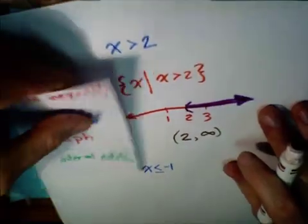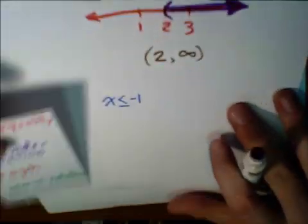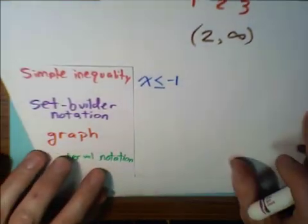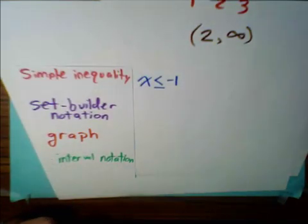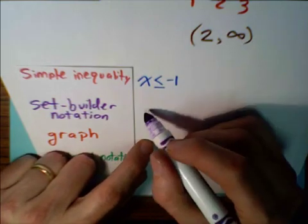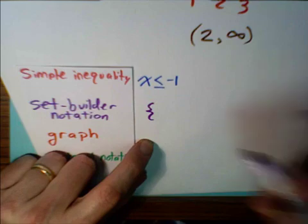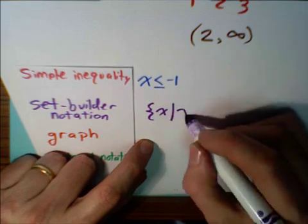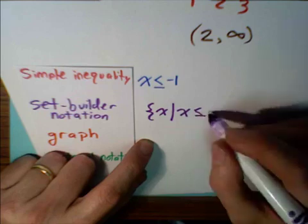Let's try another example. Here we have a simple inequality. X is less than or equal to negative 1. In set builder notation, again, curly braces, the set of all values x such that x is less than or equal to negative 1. Not a big change there.